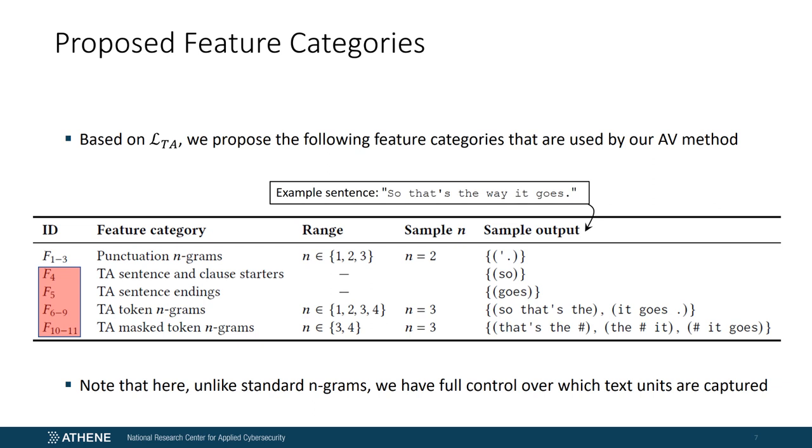Finally, the feature category TA masked token n-grams is also a form of standard n-grams with the restriction that one or two topic related words, depending on the setting of n, must appear in the token sequence. Once the topic words are identified, they are masked by the hashtag. The resulting features here are THAT'S THE hashtag, THE hashtag IT, and THE hashtag IT GOES. So the hashtag marks a topic related word here. The takeaway message is that unlike standard n-grams, here we know exactly what specific features are actually captured.